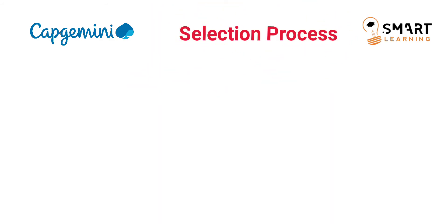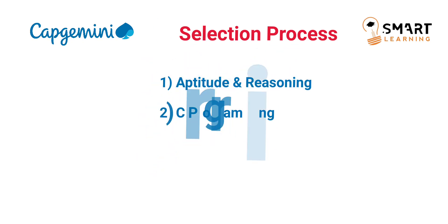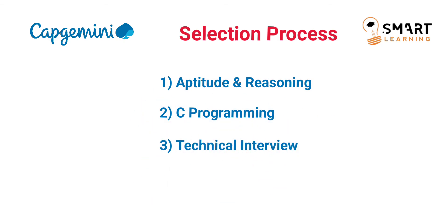Now let me tell you the selection process. There will be a total of four rounds: first is Aptitude and Reasoning, second is C Programming, third is a Technical round, followed by an HR round. These are all the details — I hope it is clear.